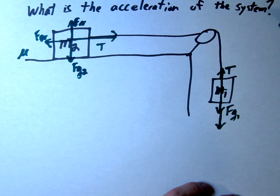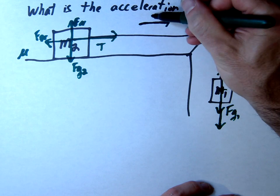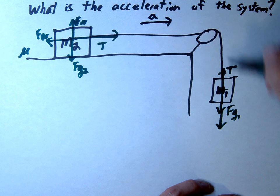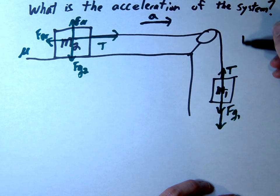Next, we'll write our summation equations. With these problems, you need to define the direction of acceleration as positive. Since this system will move to the right for the table mass, we'll define acceleration to the right as positive.